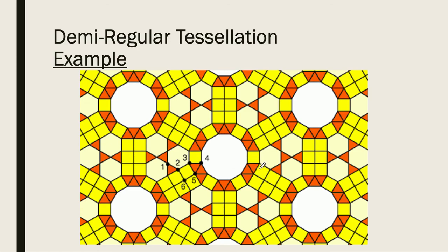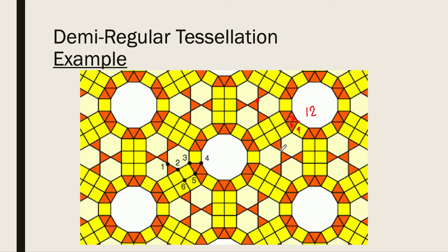In this demi-regular tessellation, we identify different vertices with different names. One vertex reads 6.3.6.3, while another reads 3.3.3.4.3.3, and another involves a 12-sided polygon — a dodecagon — giving 3.3.4.12. Since each vertex has a different arrangement, we cannot practically assign one single name to the tessellation.